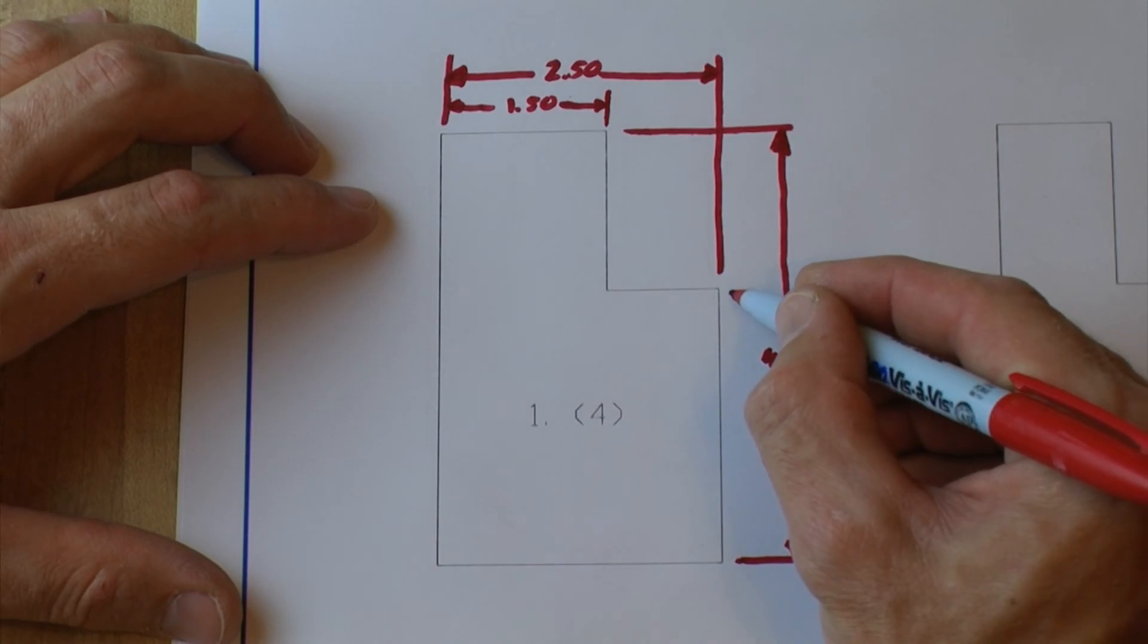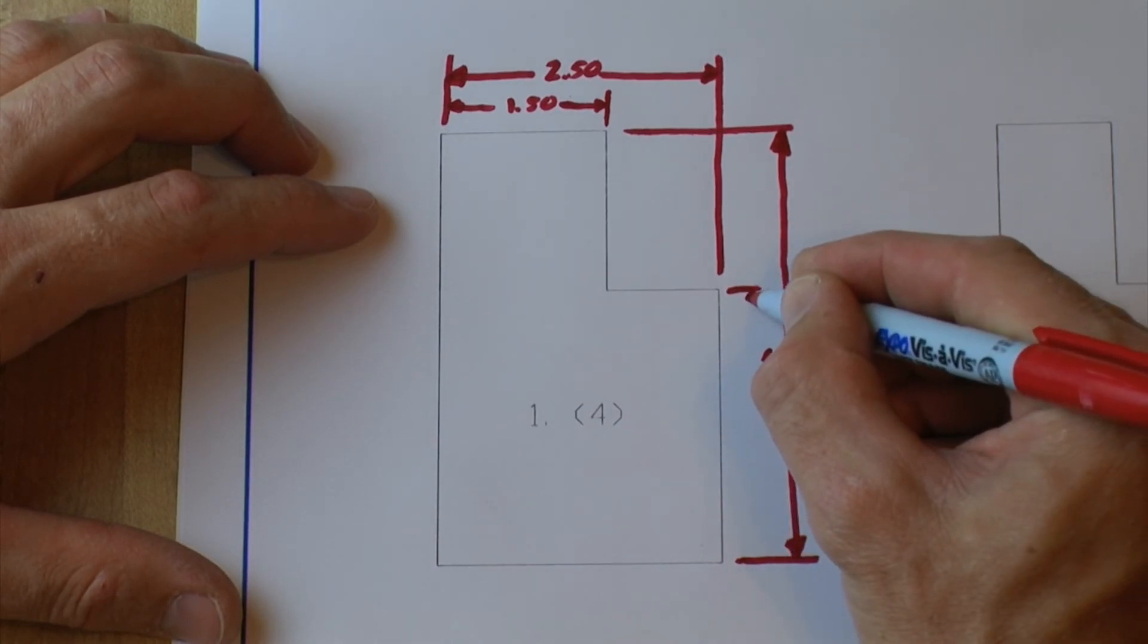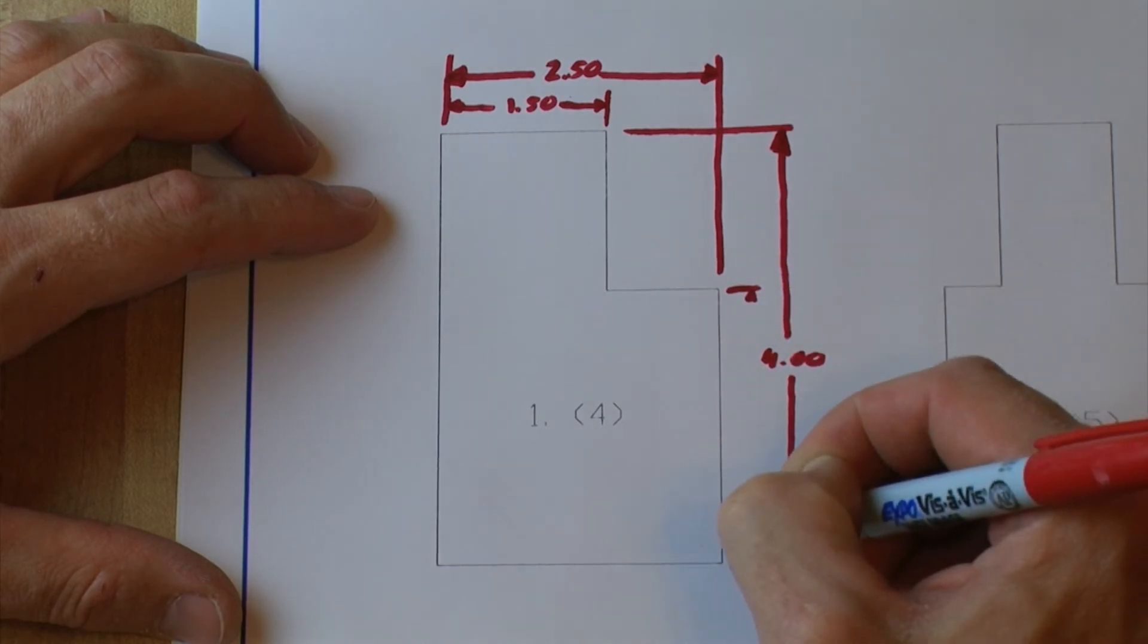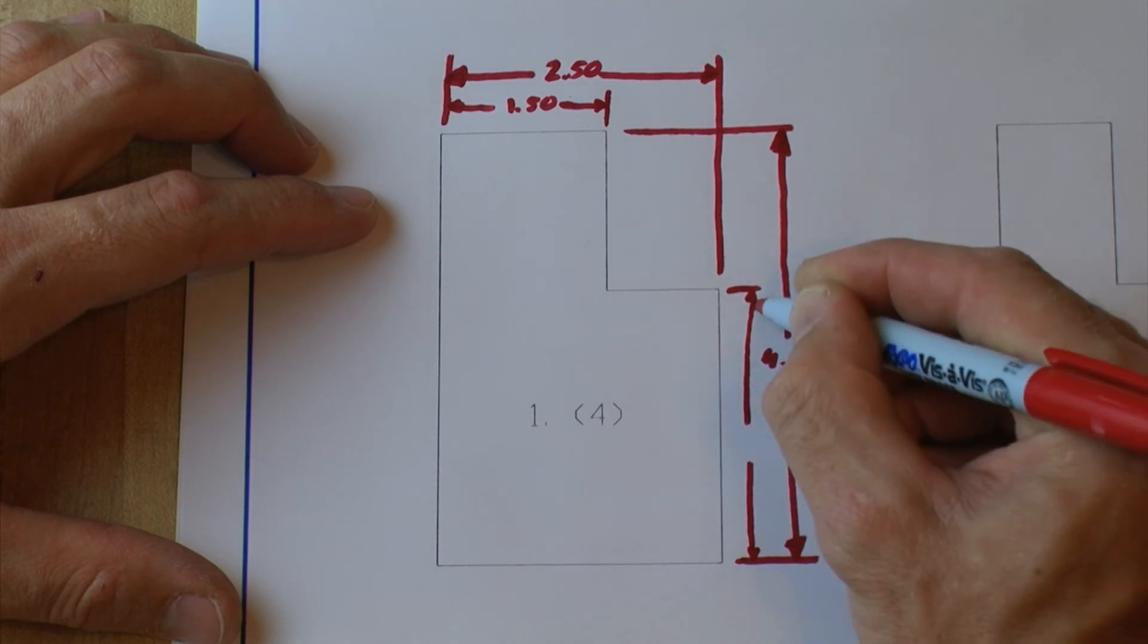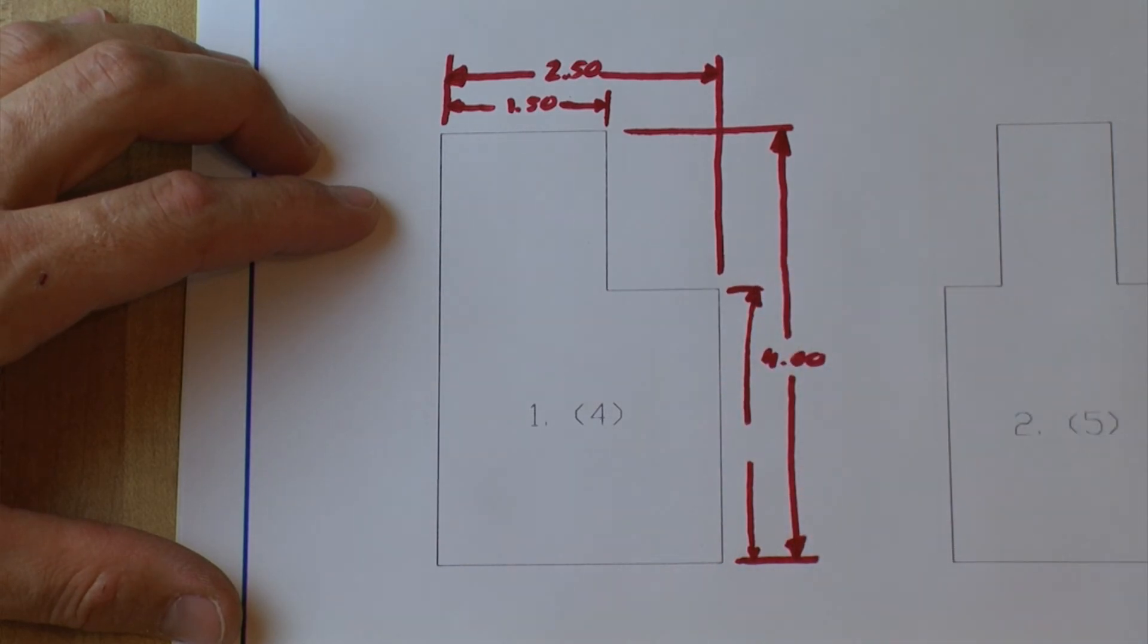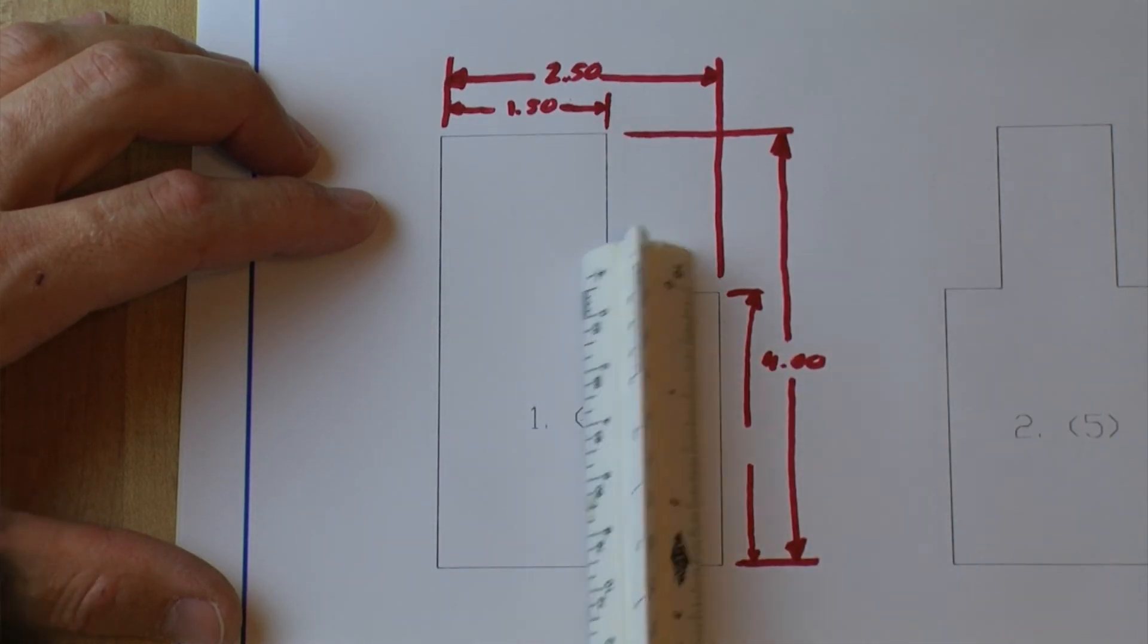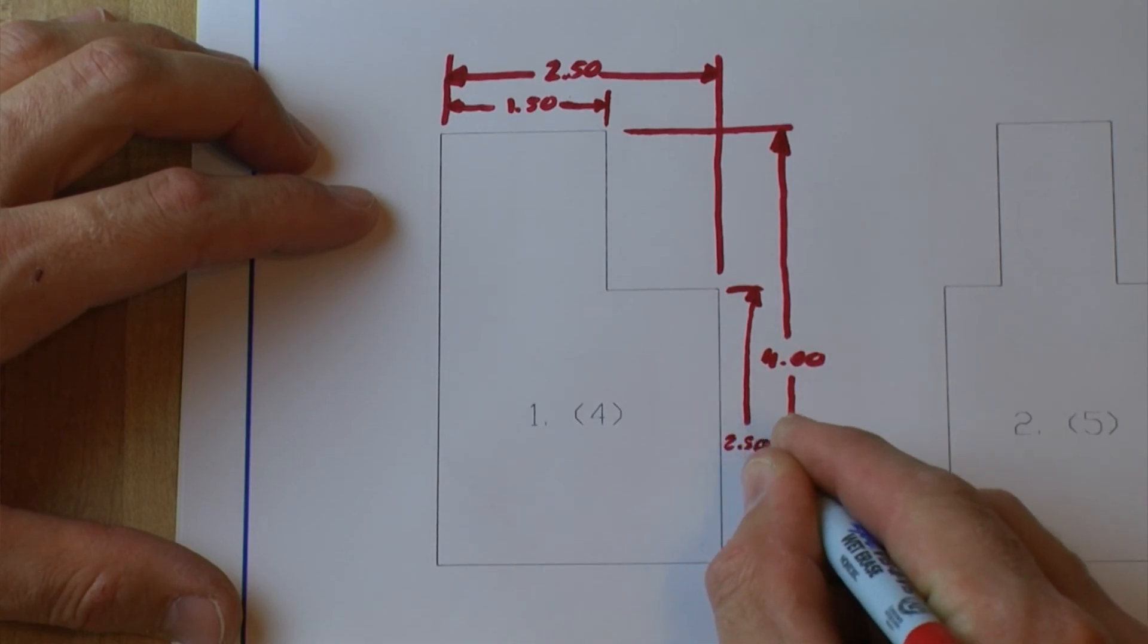And we're going to do the same thing down here. Now like I said I didn't leave myself enough room. So that's something I'm going to want to keep in mind when I do the next problem, to maybe leave myself just a little bit extra room. Let's measure this here, which is two and a half inches. Two point five zero.